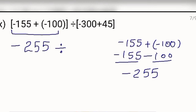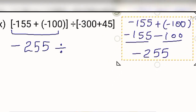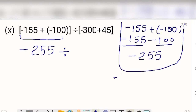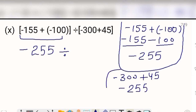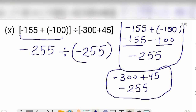Divided by — solve the other bracket: minus 300 plus 45. Signs of both numbers are different, so these numbers will be subtracted. When you subtract them you get 255, and the sign will be of the greater number which is minus. So the value of the second bracket is also minus 255. Now signs of both numbers are same, so the answer will be positive — minus minus gives plus. When you divide 255 by 255, you get 1. So the answer is positive 1.